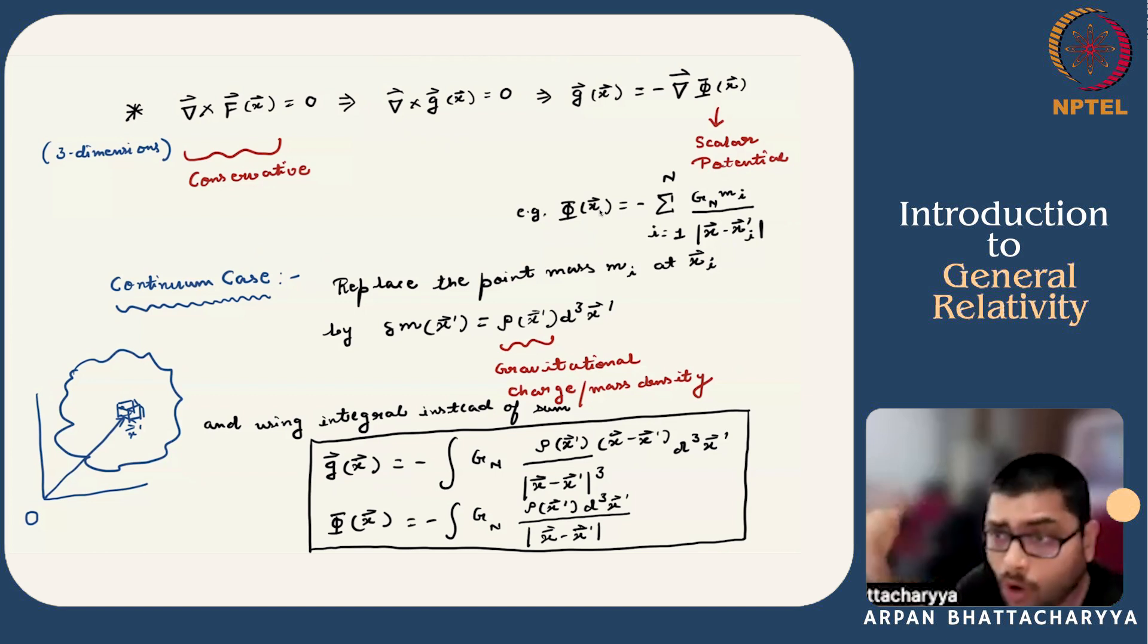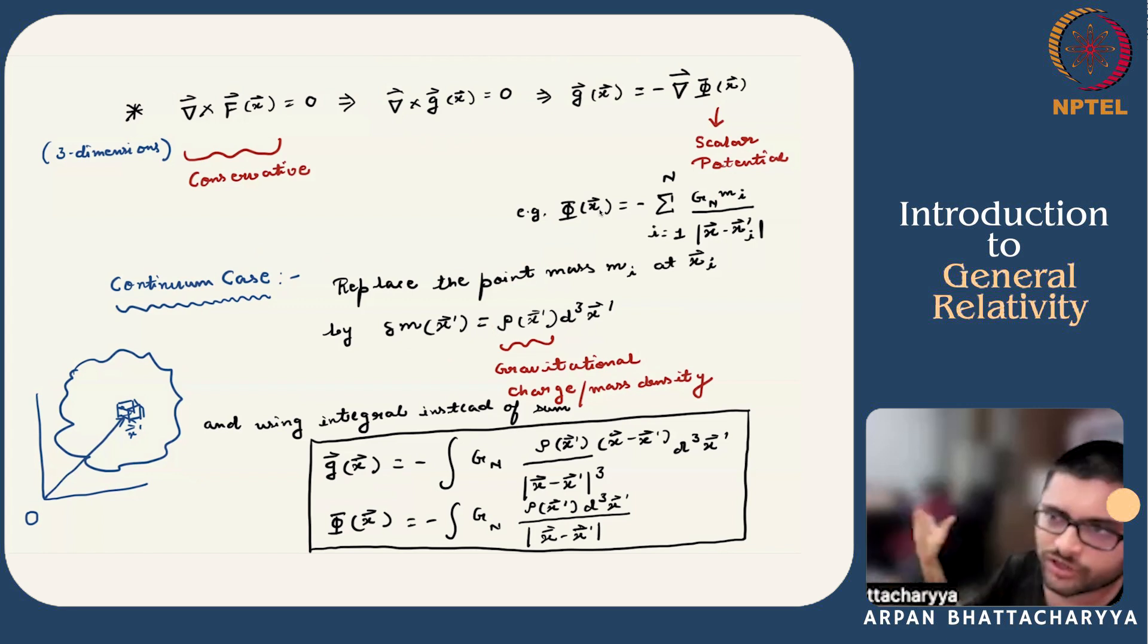Now we can generalize all these expressions for continuous distribution. Let us take this extended object and pick up a very small volume located at x'. The amount of gravitational mass inside this small volume is the density times the infinitesimal volume. If we replace all these mi's by ρ times the volume element in the previous formula, we get the corresponding expression for gravitational field and potential. We have to replace the sum by an integral, and if you do this properly, we get the expression for g and Φ shown in this box.